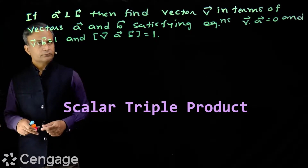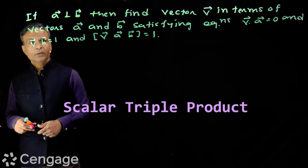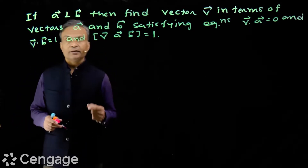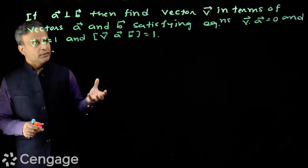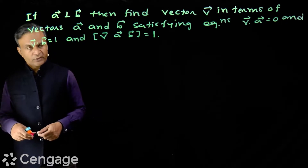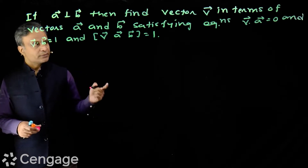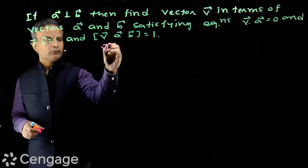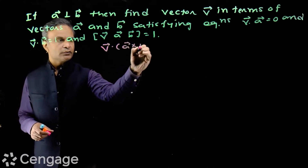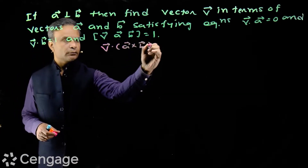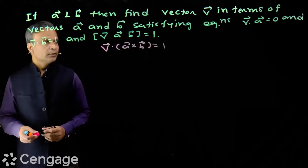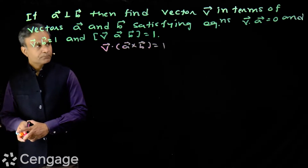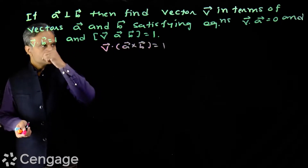Here, we have one more equation. If vectors a and b are perpendicular, then find vector v. In terms of vectors a and b, satisfying equations — we have three equations: v dot a is equal to zero, v dot b is equal to 1, and v dot (a cross b) is equal to 1. We have to express vector v from a and b terms which satisfy these three equations.